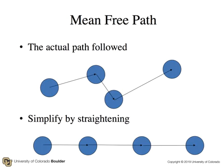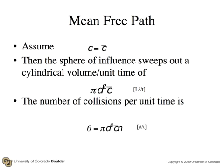Now, the actual path followed by molecules is quite random. So we can do a simple back-of-the-envelope calculation by straightening out the path. Let's just assume the molecules are going straight. And let's assume that the speed of the molecule is equal to the average molecular speed. Then the sphere of influence sweeps out a cylindrical volume per unit time of pi d squared times the velocity, times the speed. And so the number of collisions per unit time turns out to be equal to pi d squared c bar times the number density. So that's a number of collisions per unit time, and we call that theta.